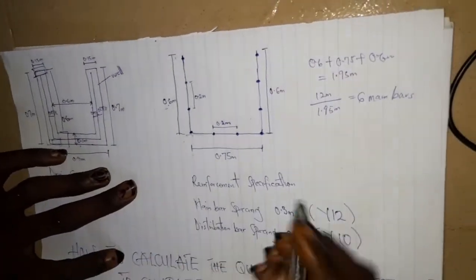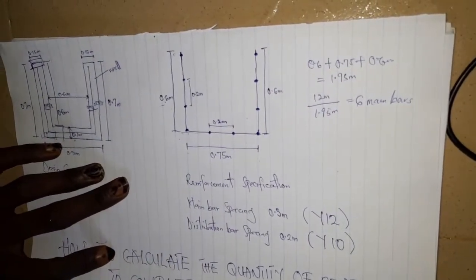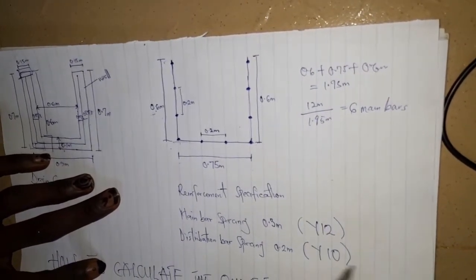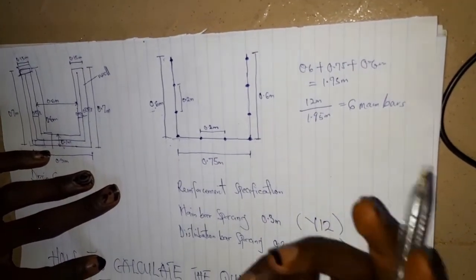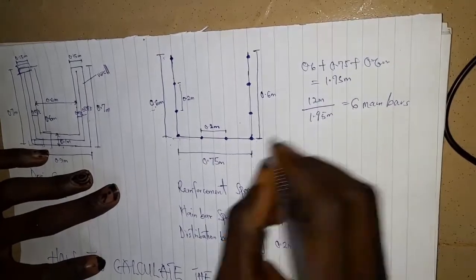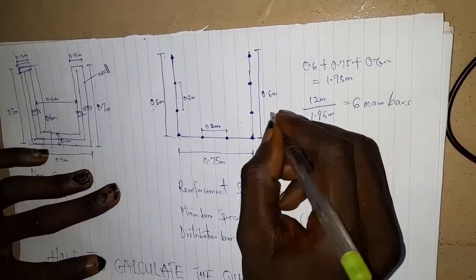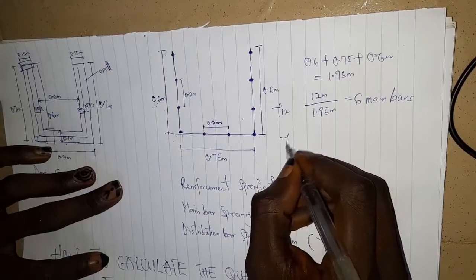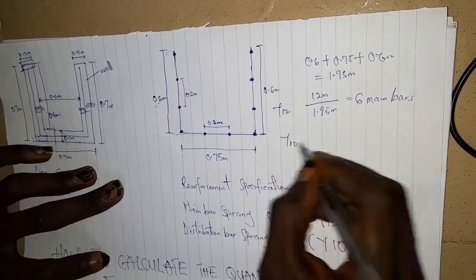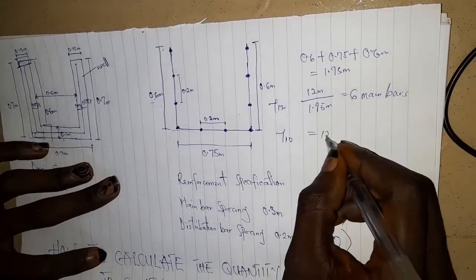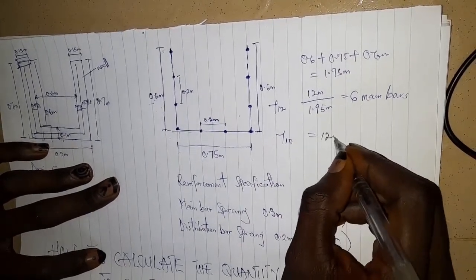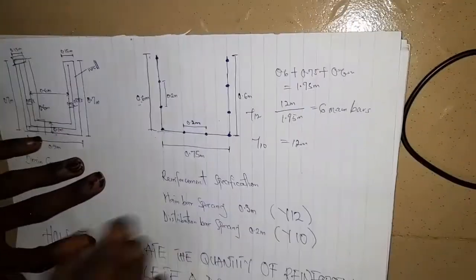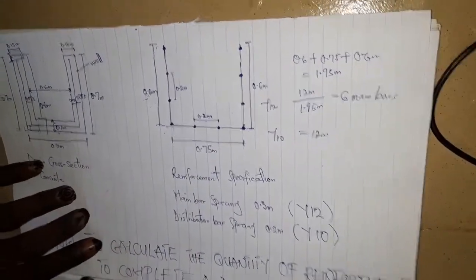For the distribution bars, we are using a full length. The Y10 length is also 12 meters, so we are using the complete 12 meters for the distribution bar reinforcement.